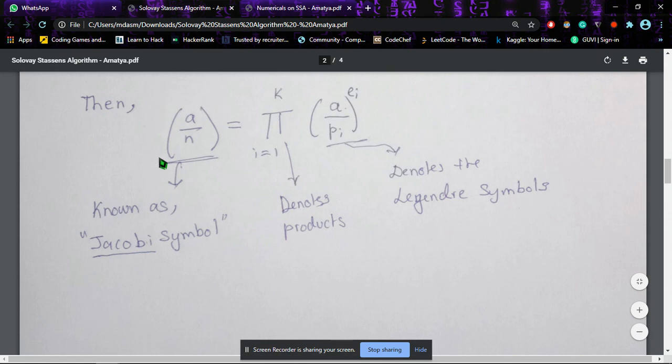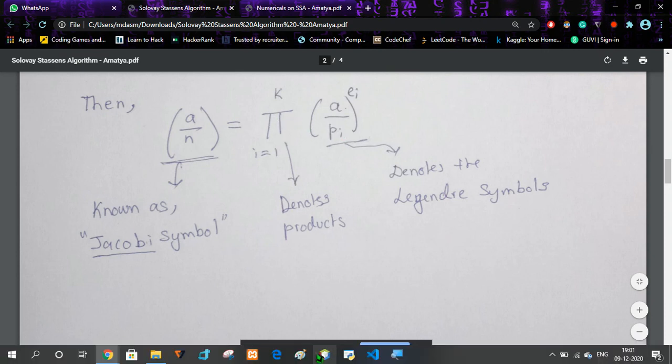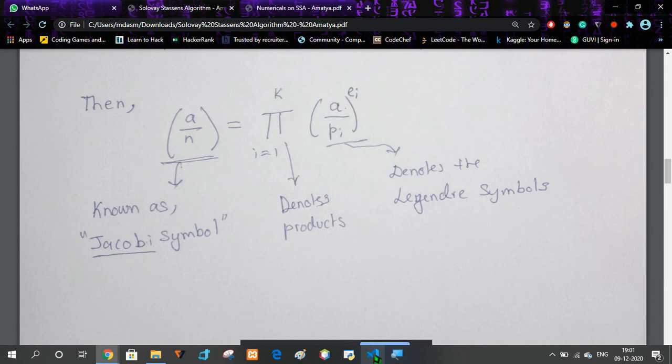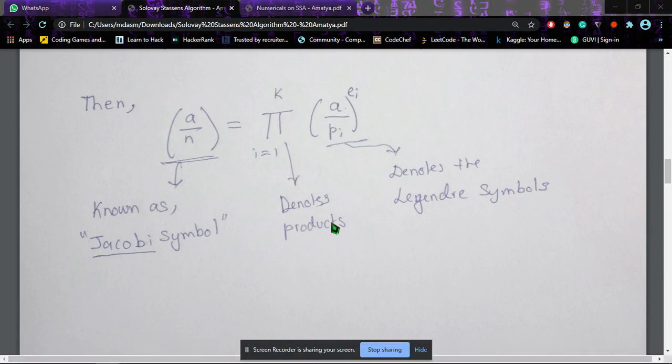Now if this condition is satisfied, basically what we are doing is—now since this is a composite number—this symbol a/n is known as the Jacobi symbol. This function denotes the products, so like how you use summation, same way you are basically denoting the product.